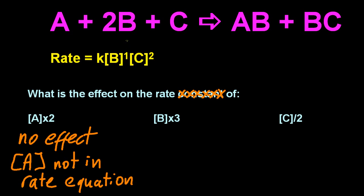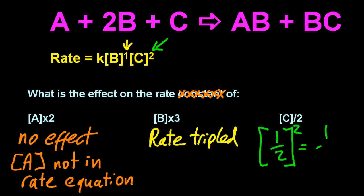If I triple B, you'll notice that B is raised to the power 1 and the effect is going to triple the rate. It's a directly proportional relationship. And if I half C, well, that squared sign means it's going to give me a quarter. So the rate is going to be quartered, four times slower.